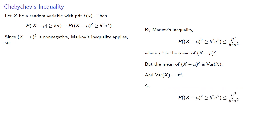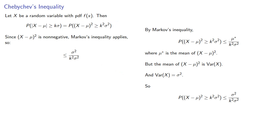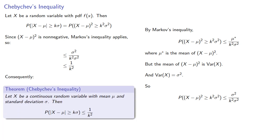And so Markov's inequality gives us a bound on this probability. Since the numerator and denominator both have a factor of sigma squared, we can remove it, leaving 1 over k squared. Consequently, let x be a continuous random variable with mean mu and standard deviation sigma; then the probability that x is greater than k standard deviations away from the mean is less than or equal to 1 over k squared.